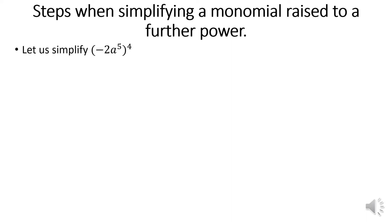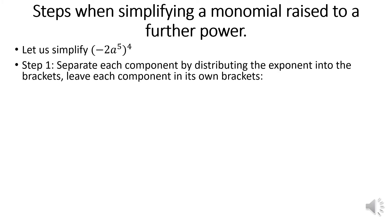Next, we're going to look at steps for simplifying a monomial raised to a power. We will look at this monomial: (−2a⁵)⁴. Step number 1: we separate each exponent by distributing the exponent into the brackets, leaving each component in its own bracket. So we distribute the exponent like that.